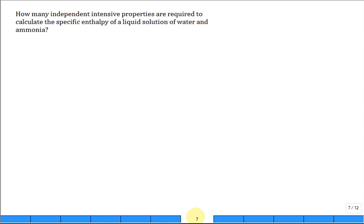Let's solve this problem. How many independent intensive properties, they're asking for F. What is F? The number of independent intensive properties that are required to calculate the specific enthalpy of a liquid solution of water and ammonia. So I'll have not a two-phase solution, but a liquid only.